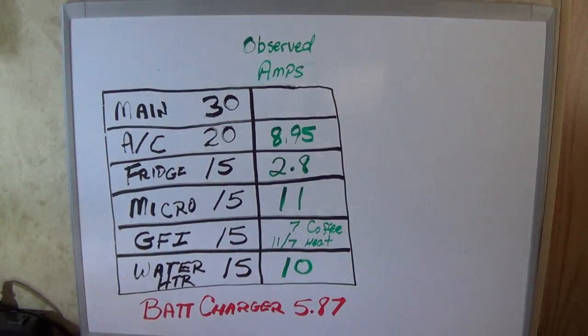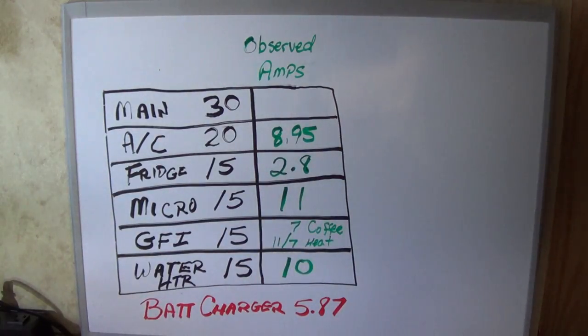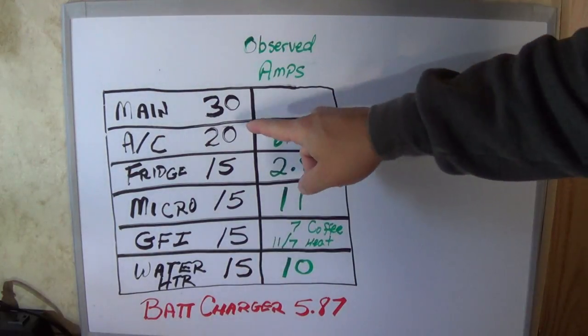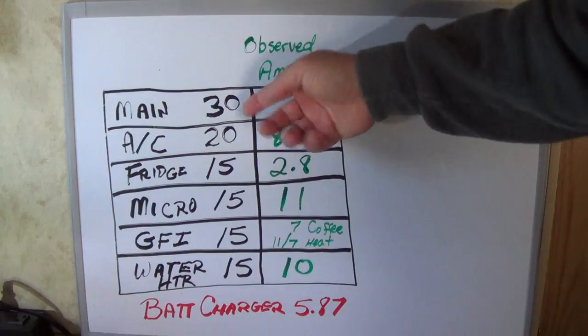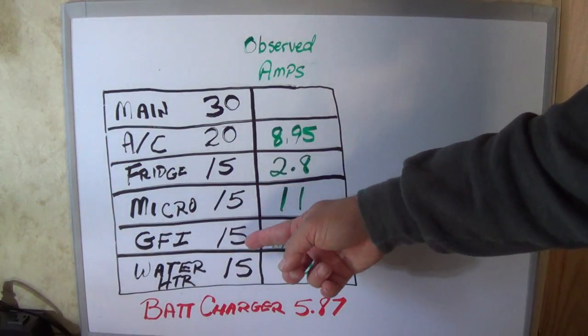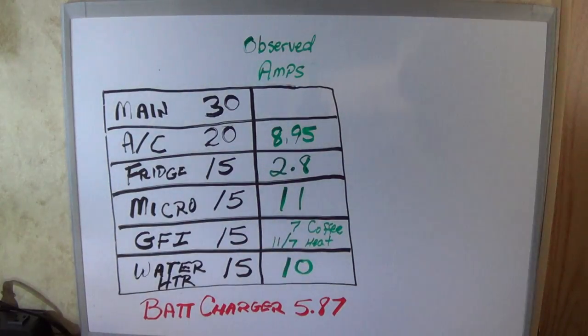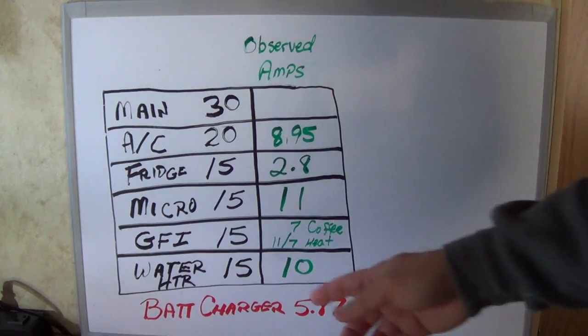Using state of the art graphics, what I've done is created a mock up of my circuit breaker panel in my travel trailer. And it comes with a 30 amp main. There's a separate breaker for the AC, the fridge, the microwave, the GFI, that's just all the outlets scattered about the trailer all hooked together in one circuit, and the water heater.